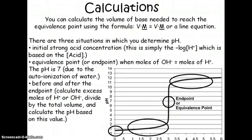So basically to do calculations for these, to calculate the volume of base that you would need to reach the equivalence point, you're just going to use M1V1 equal M2V2. There are three different situations in which you would need to determine the pH to get the titration curve of a strong acid strong base titration. So initially, if you wanted the strong acid concentration that would just be the negative log of the acid concentration because we know that the acid will completely dissociate into H plus ions. And then at equivalence point, we would want to know the pH and this is always going to be 7 because it's a strong acid and a strong base.